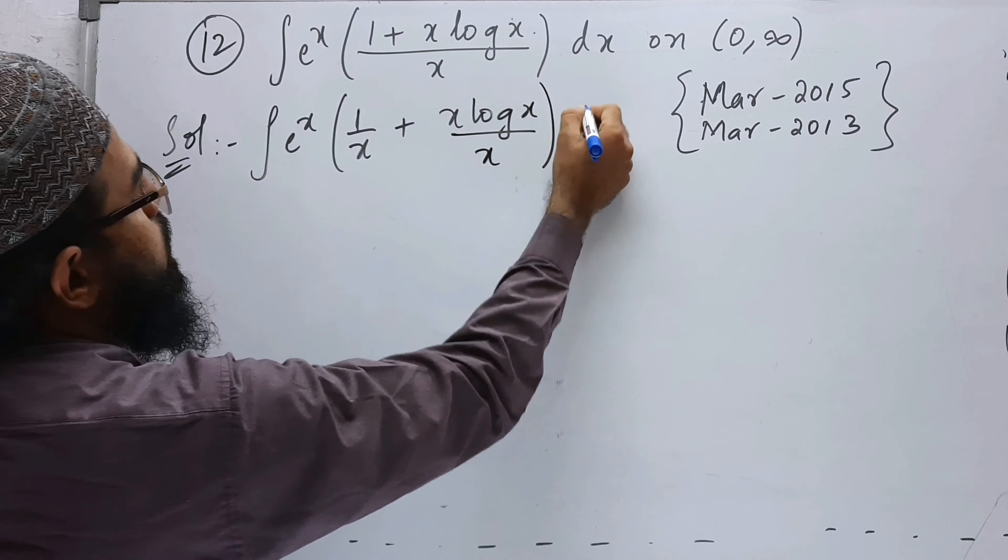x and x will get cancelled. Next, e to the power of x, 1 by x plus log x.